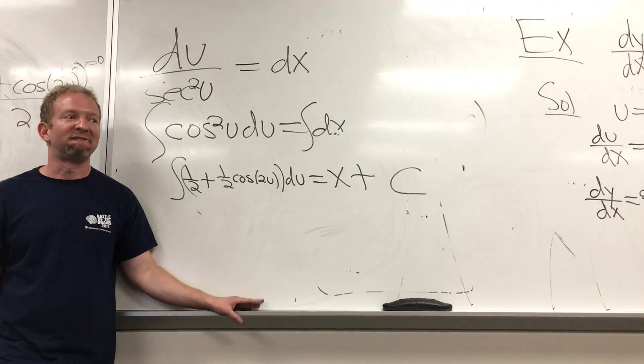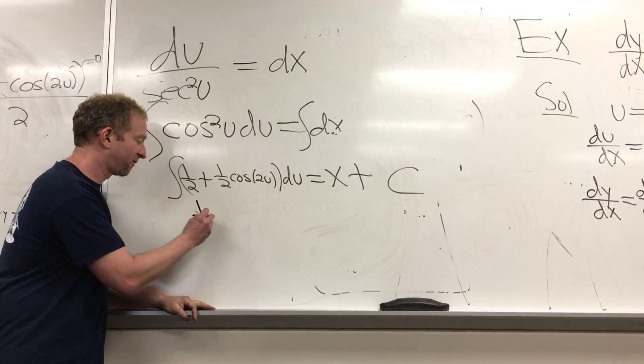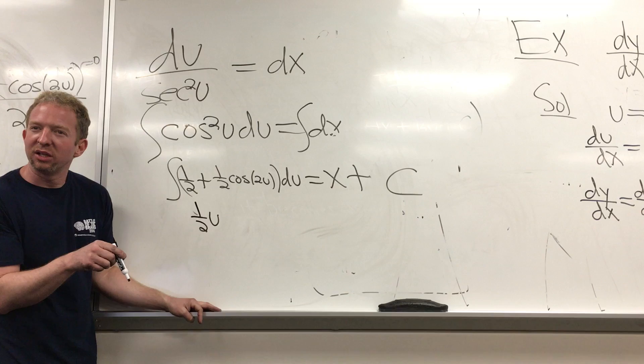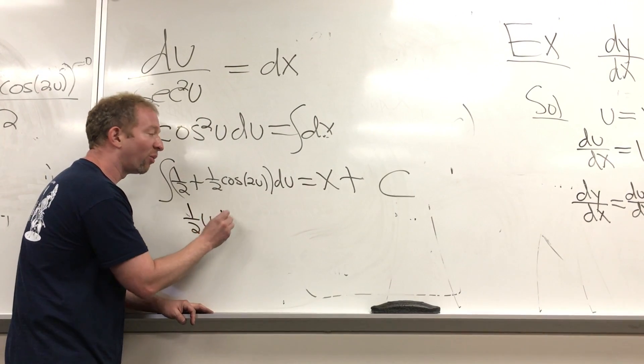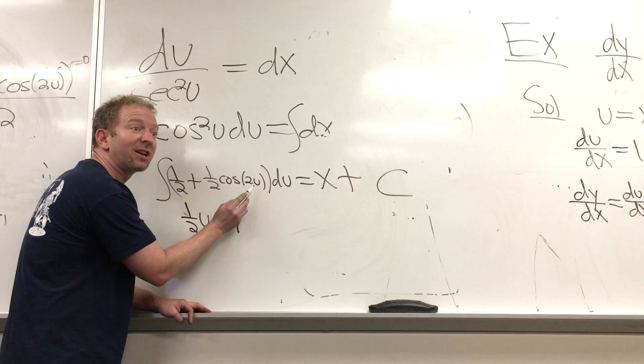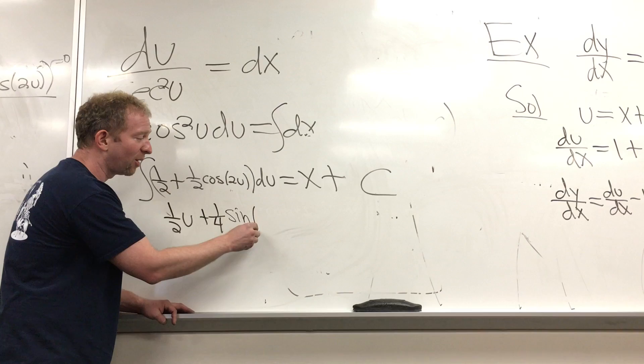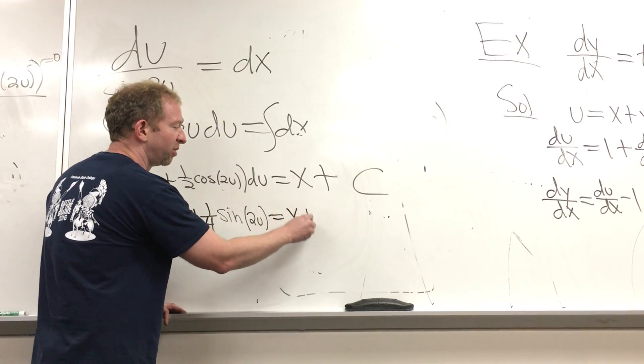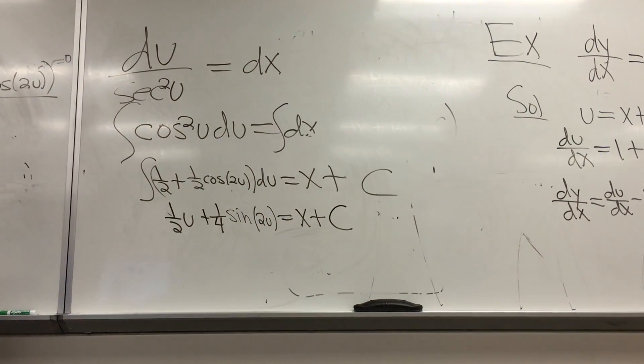Anything hazy up here? And then when you integrate this, you just get what? 1 half u. What's a function whose derivative is cosine? Sine. Sine. So this is going to be 1 fourth. Because you're dividing by 2, right? Sine. Oh wow. 2u equals x plus c. And we're not done. Right?